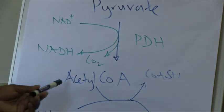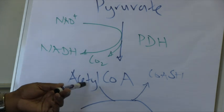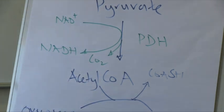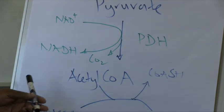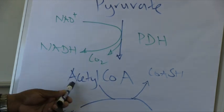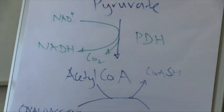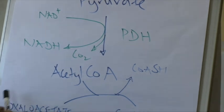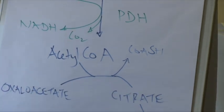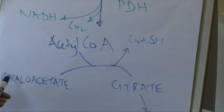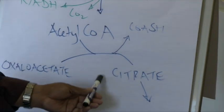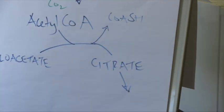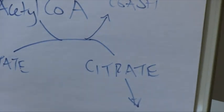Remember that these two carbons from acetyl-CoA were originally present in the glucose molecule. Now the acetyl coenzyme A will enter the TCA cycle by condensing with the four-carbon compound oxaloacetate, leading to the formation of citrate, or citric acid, which is a six-carbon compound.